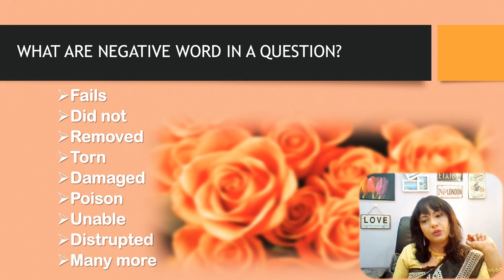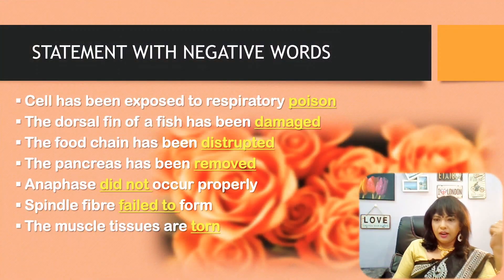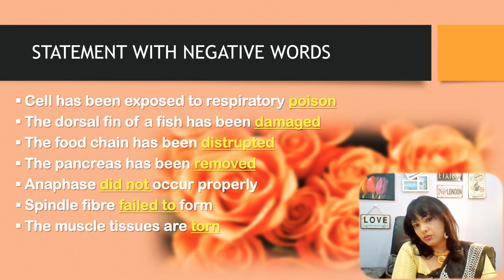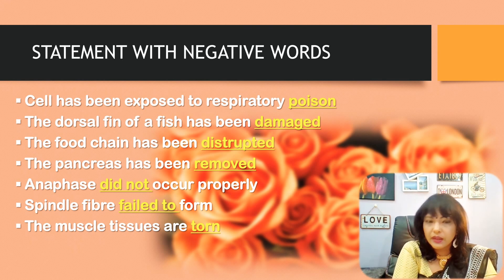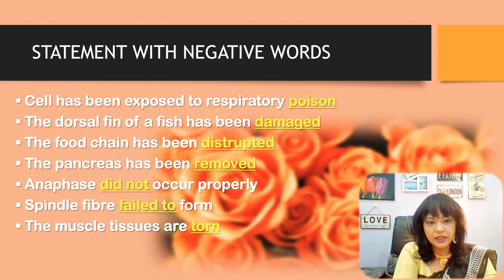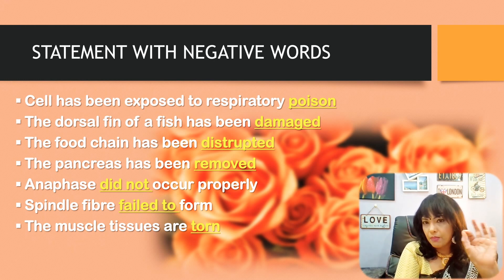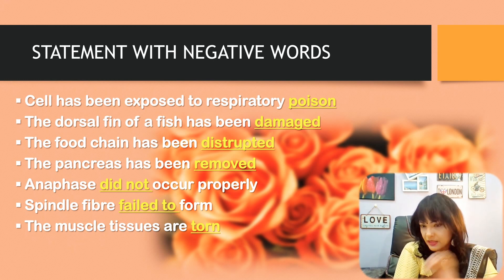For further understanding, I've given you examples of statements with negative words. A cell has been exposed to respiratory poison. The dorsal fin of a fish has been damaged. The food chain has been disrupted. The pancreas has been removed. Anaphase did not occur properly. Spindle fiber failed to form. And muscle tissues are taut.